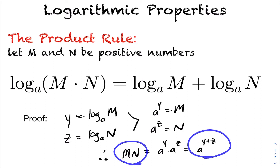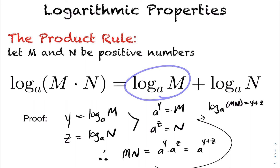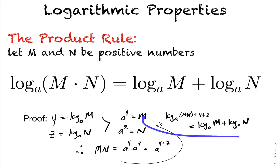Writing this in logarithmic form, the exponent we raise the base to in order to get m times n is y plus z. But y plus z is exactly equal to log base a of m plus log base a of n. Therefore, we have our proof of the product rule.